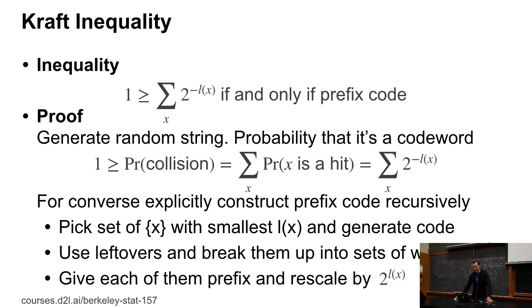Okay. So that would be a prefix code. Now, here's a really cool inequality, a so-called Kraft inequality, which says that if and only if we have a prefix code, then the following holds: one is greater or equal than the sum overall x's of two to the minus the length of that code.